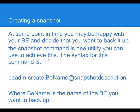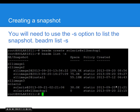To create a snapshot, use the syntax: beadm create, the name of the boot environment you want to snapshot, then a description of the snapshot. Here's an example: beadm create on our main boot environment, calling the snapshot Solaris 11 backup 1. You can also put dates and other indicators in the description so you know exactly when the snapshot was created. To see the snapshot, you do beadm list -s, and you can see at the bottom that the snapshot was created.